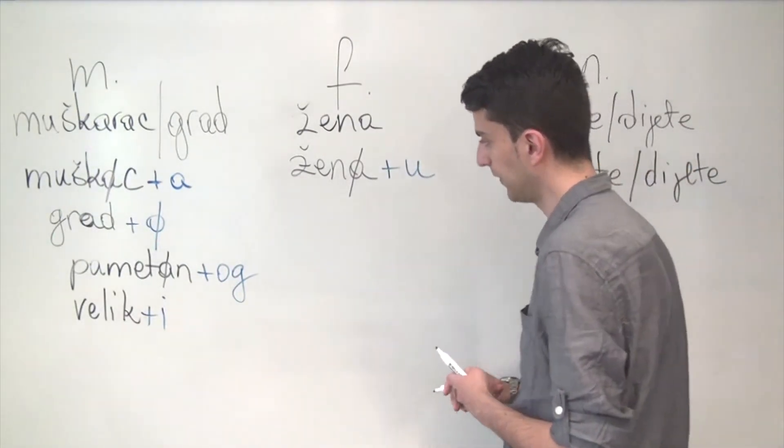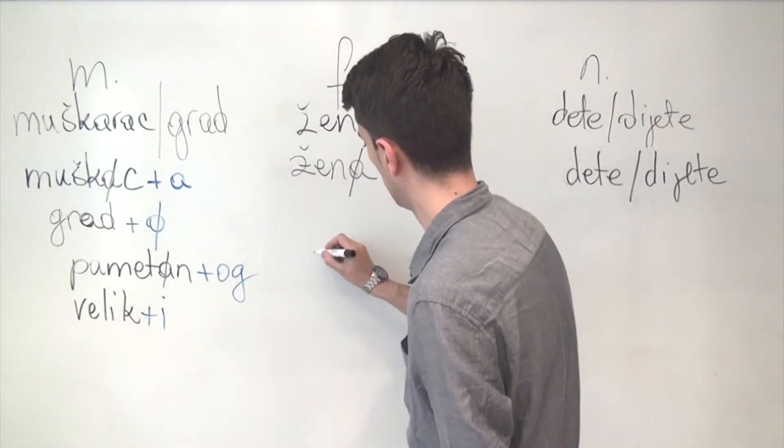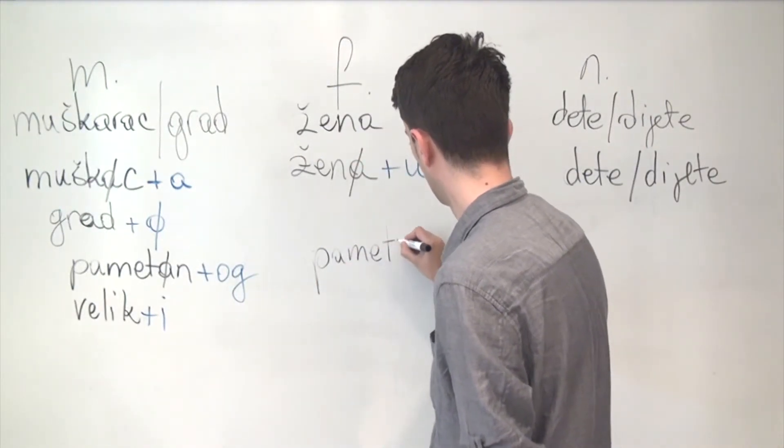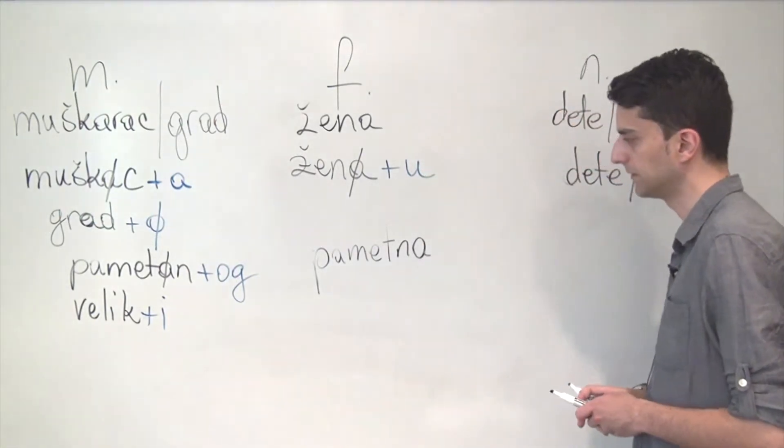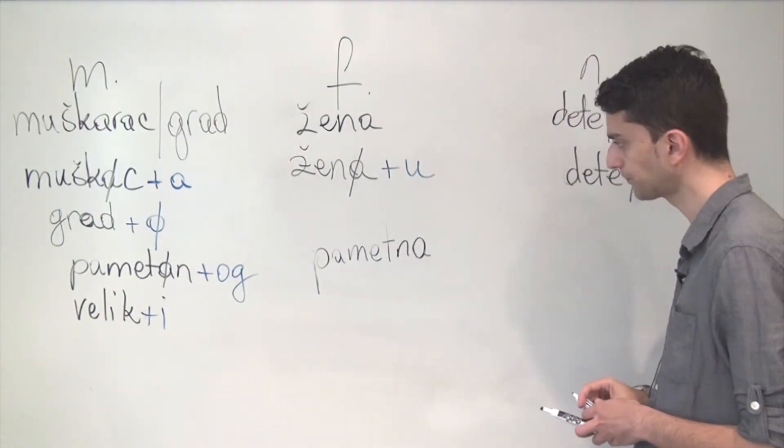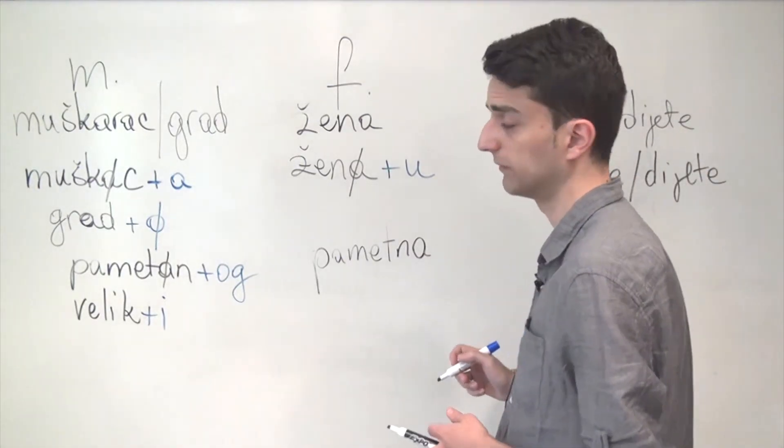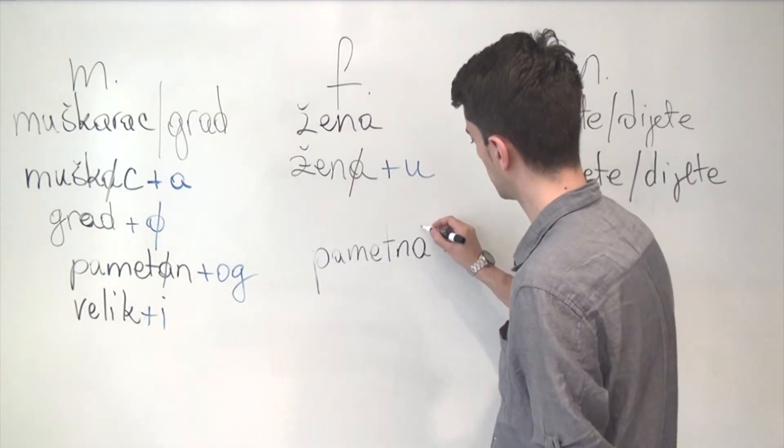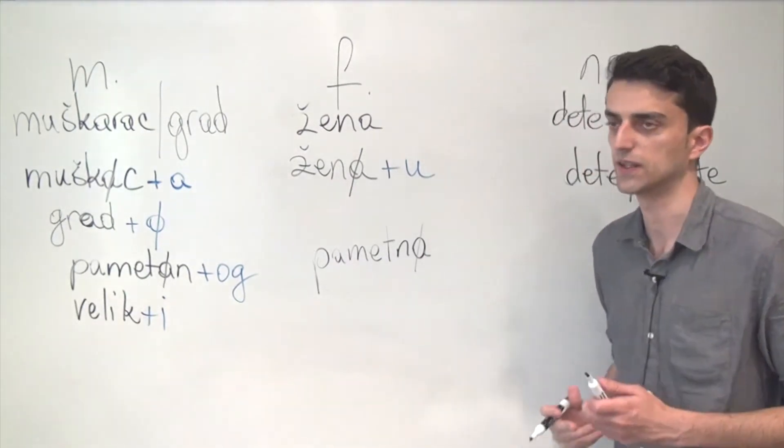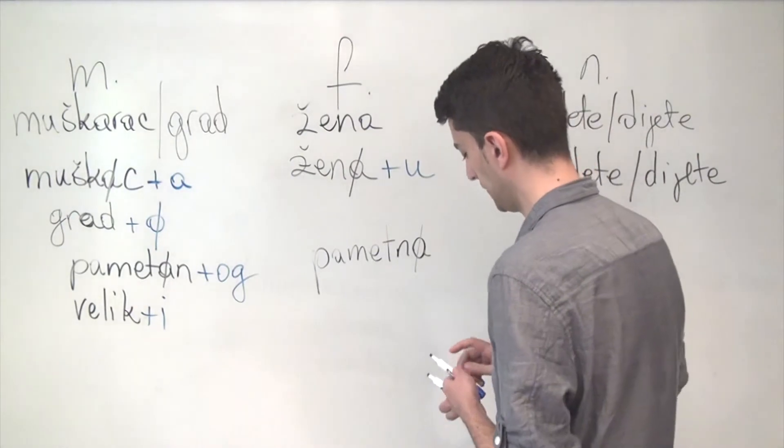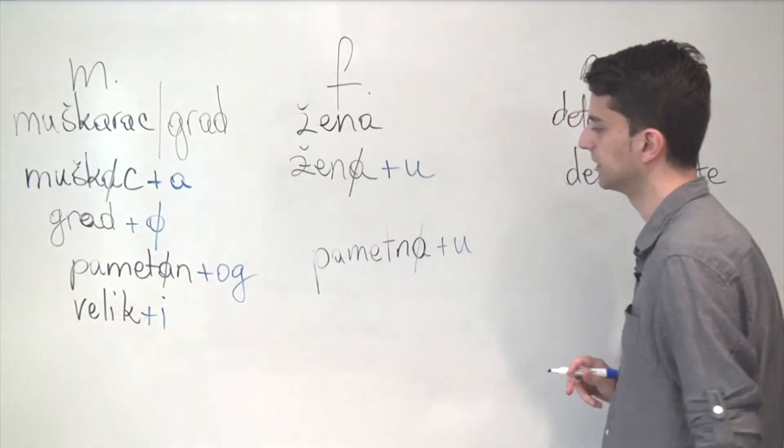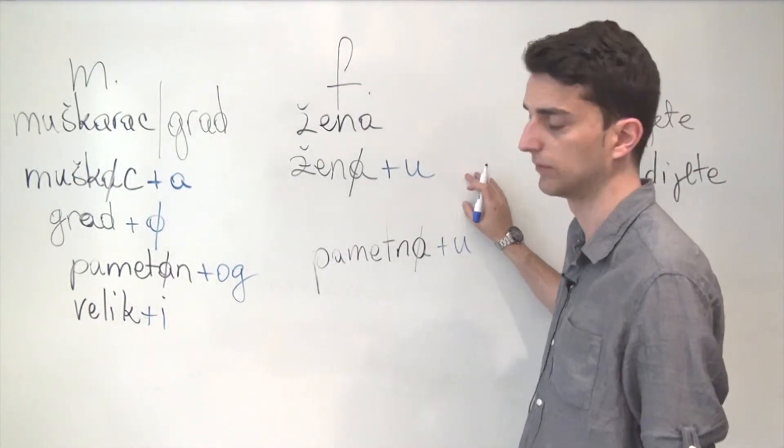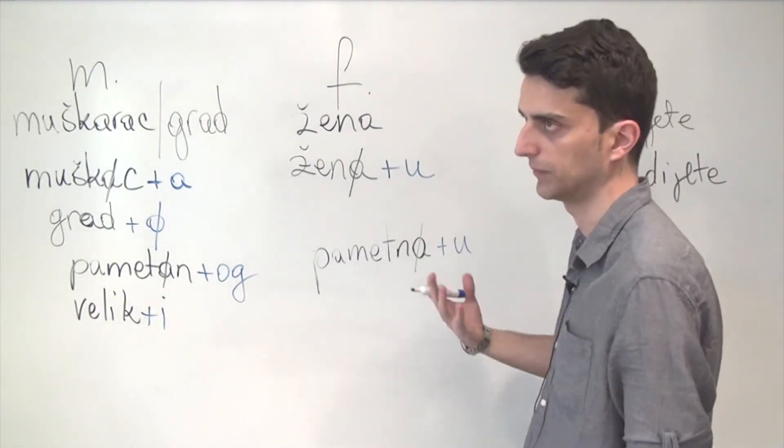When it comes to feminine adjectives, let's write down the feminine adjective Pametna, smart, again. And here we have a situation where the suffix is exactly the same for both the adjectives and the noun. So you drop the E and you add U and what you get is Pametnu ženu. Volim Pametnu ženu, I love the smart woman, or that smart woman, or a smart woman, depending on the context.